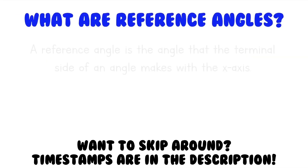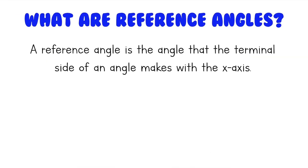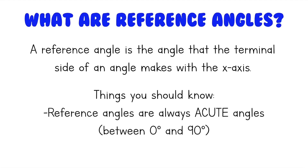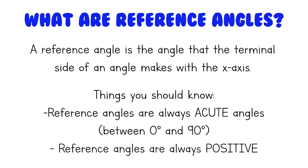What are reference angles? A reference angle is the angle that the terminal side of an angle makes with the x-axis. Some things you should know: reference angles are always acute angles, which means they're between 0 degrees and 90 degrees, or 0 and pi over 2. And reference angles are always positive — so, reference angles are always acute positive angles.